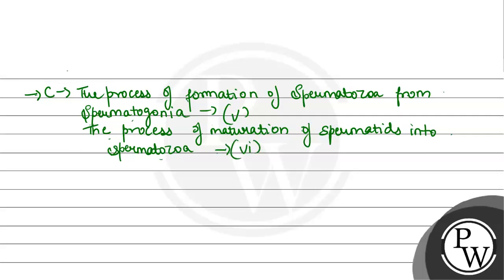So if we look at the first step, which is the fifth step, this process is called spermatogenesis. So this is spermatogenesis, which is our fifth labeling.